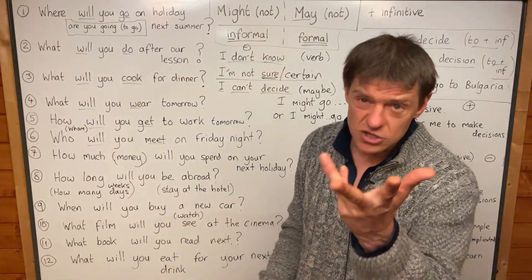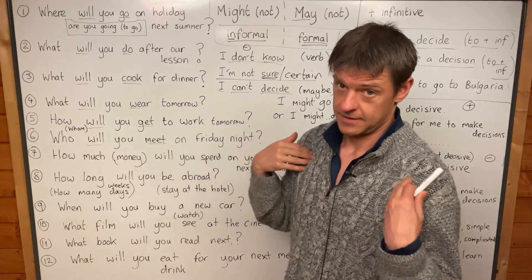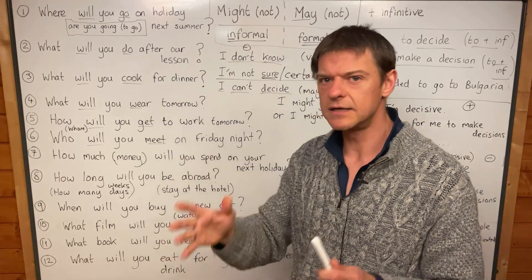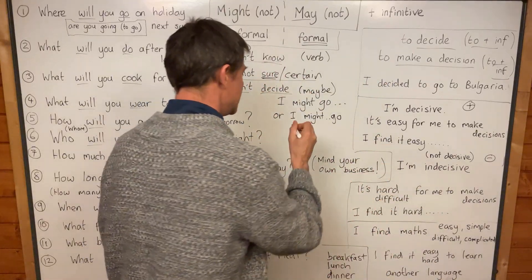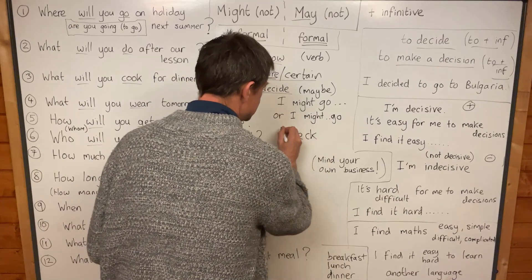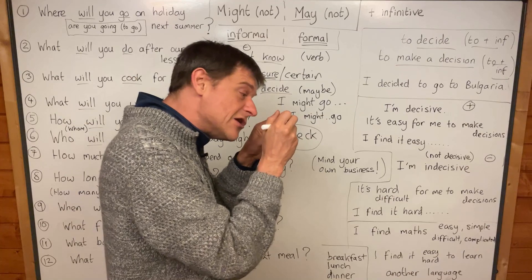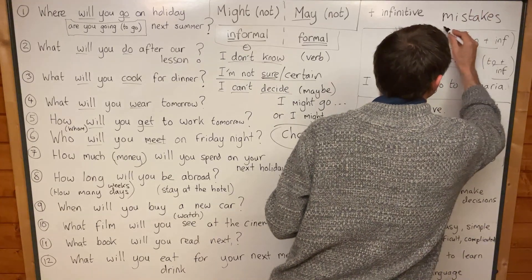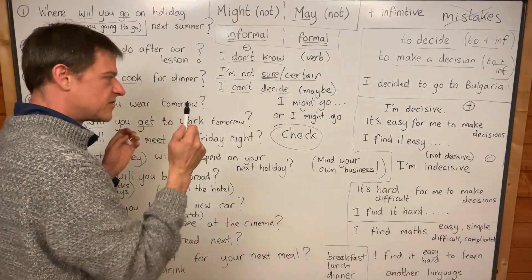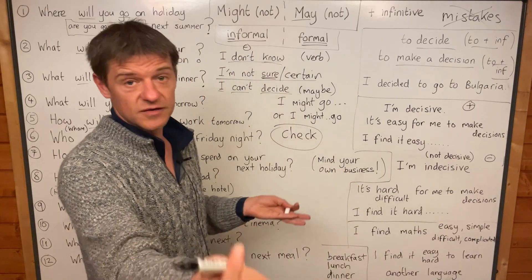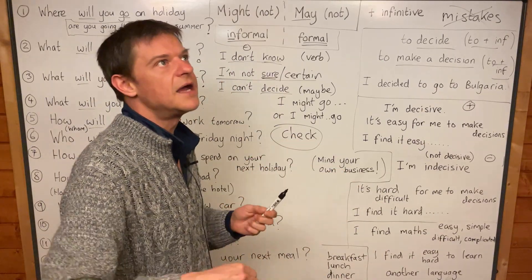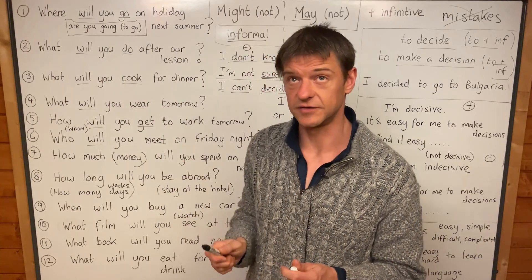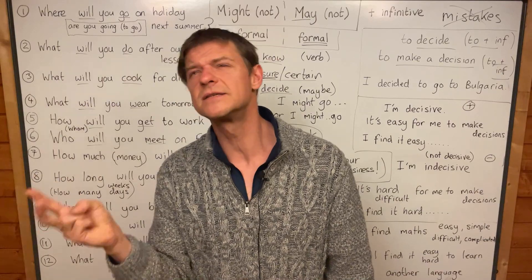What will you do after our lesson? I might read a book. I might check my student's homework. Teachers must check homework — it means I look at the student's homework and see if I can find mistakes. Mistakes are bad English, mistakes we cross out. I might check some homework, I might read a book, I might go to the shop. What will you do after our lesson? Say: I might do this, I might do that.